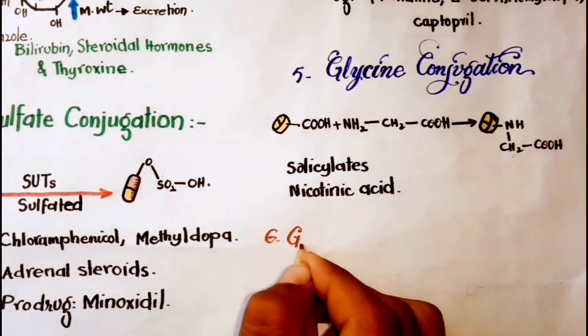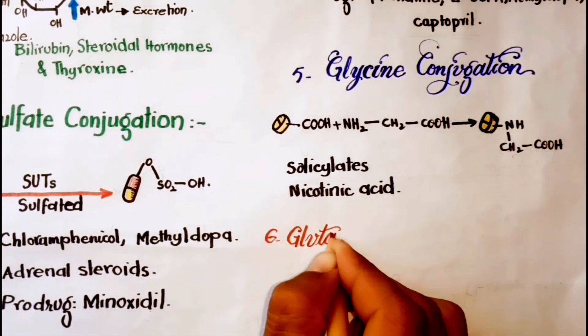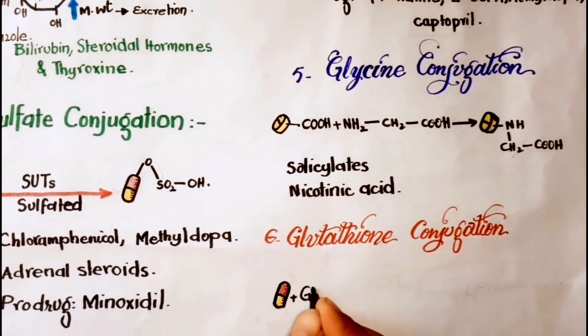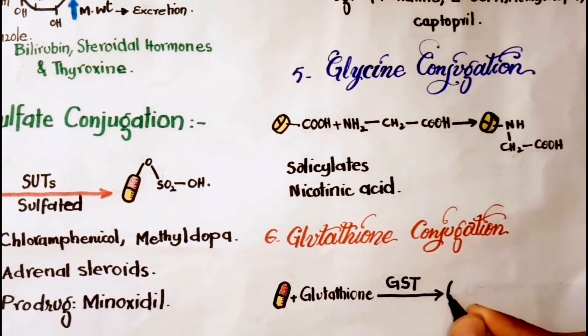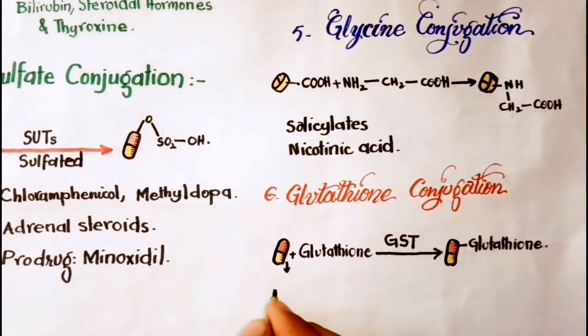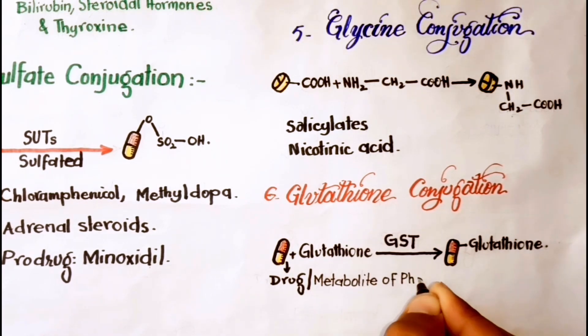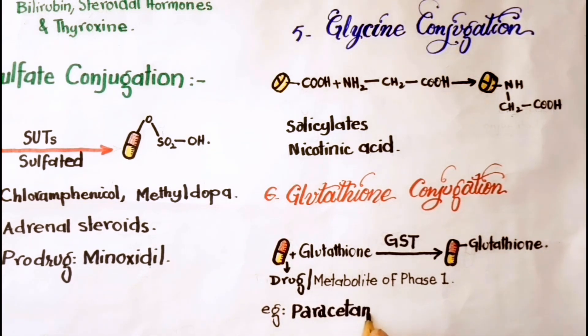The last is glutathione conjugation. Glutathione conjugation is carried out by glutathione S-transferase. It is normally a minor pathway. However, it serves to inactivate highly reactive intermediates formed during metabolism of certain drugs. For example, paracetamol.